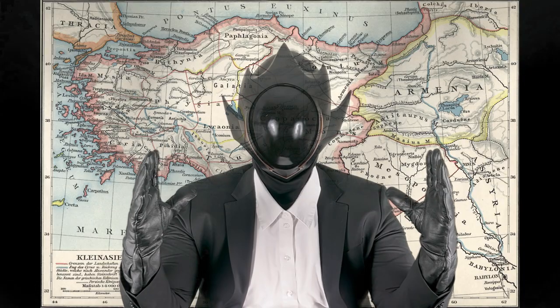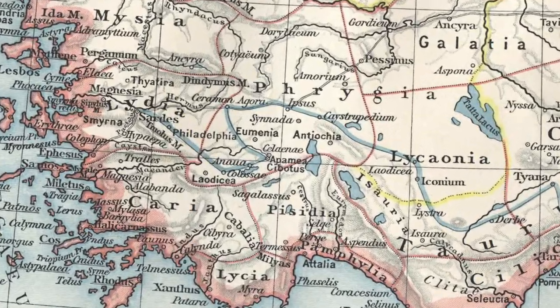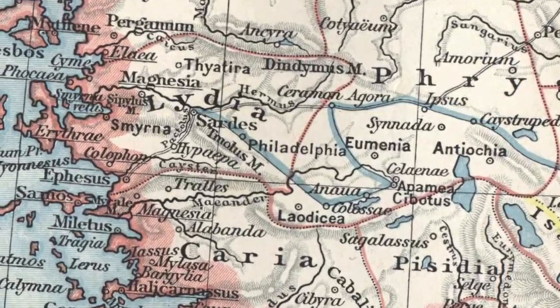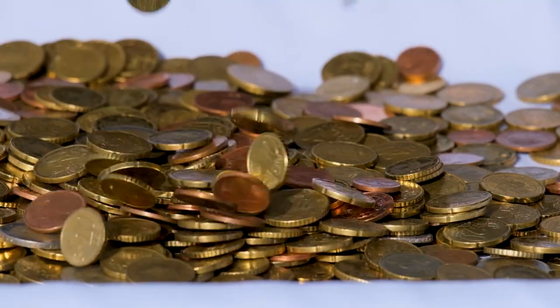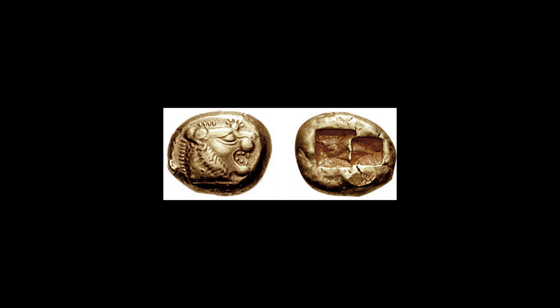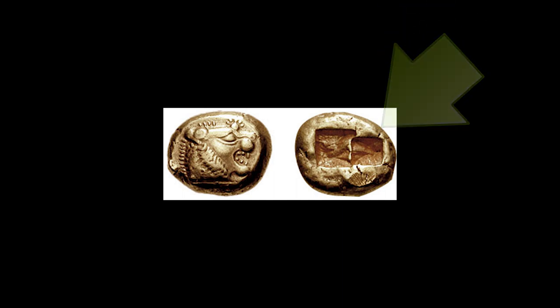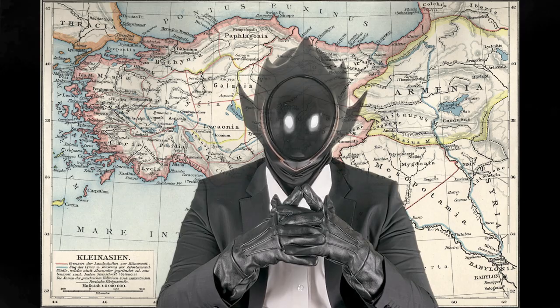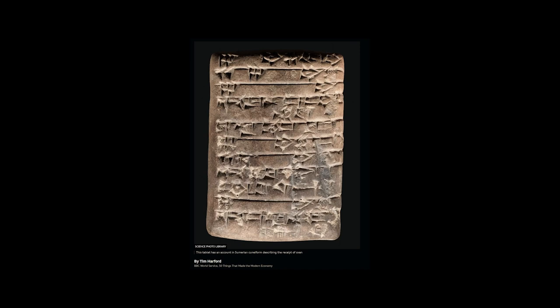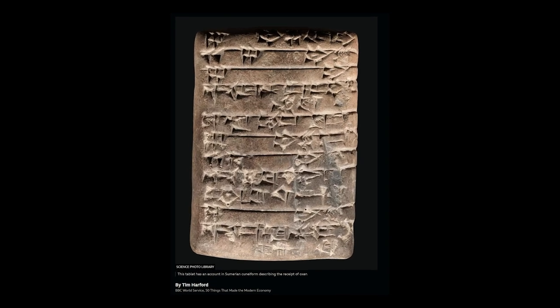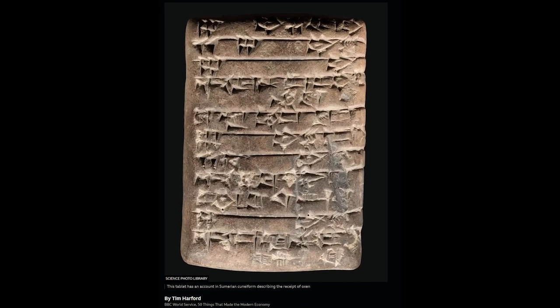Enter the Lydians, an ancient civilization from modern-day Turkey. Around 600 BC, they revolutionized trade by introducing the first minted coins. These coins were made of electrum, a natural alloy of gold and silver, and each coin was stamped to guarantee its value. Meanwhile, in Mesopotamia, the concept of credit was emerging — clay tablets inscribed with cuneiform script represented agreements and debts.